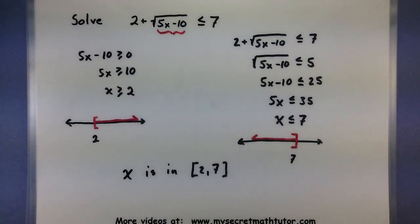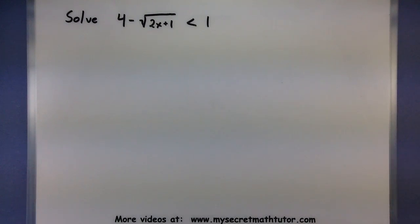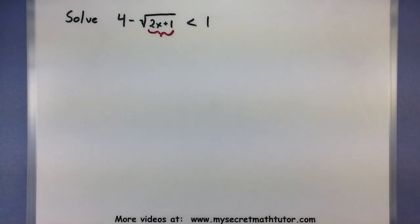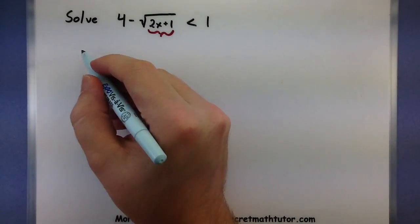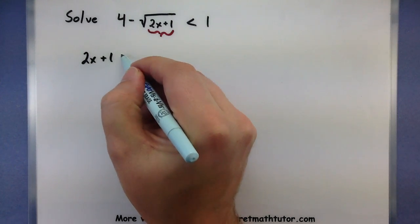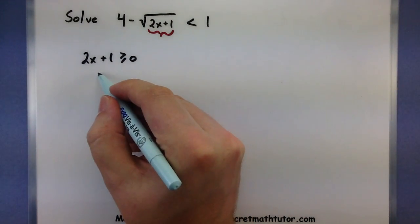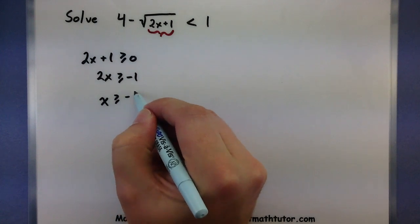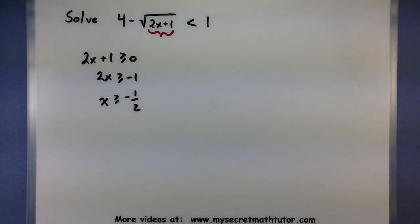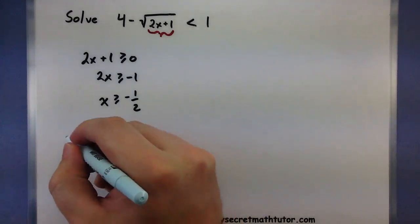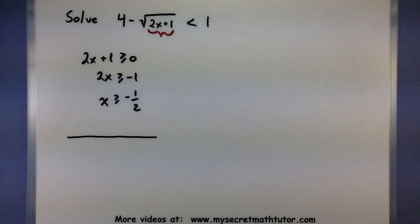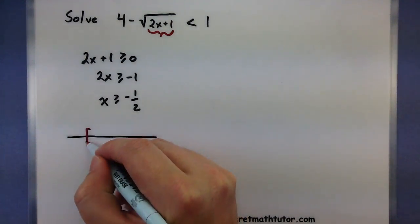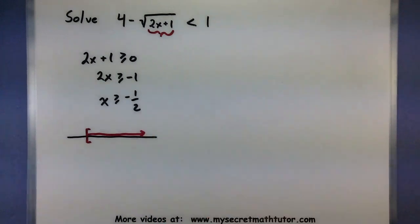Let's try this one more time just to make sure we have the hang of it. For this one, we want to solve 4 minus the square root of 2x plus 1 is less than 1. So just like before, let's go ahead and grab our radicand and find out where that is greater than or equal to 0. So 2x plus 1 must be greater than or equal to 0. To solve it, we'll go ahead and subtract 1 from both sides and divide by 2. So I'm getting that x is greater than or equal to negative one-half — think of that on the number line, greater than or equal to negative one-half.